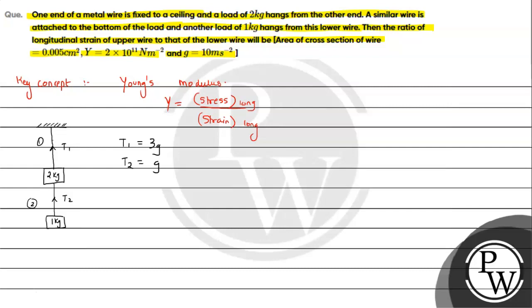We have to get tensions in both wires. Similarly, we need to write for the lower wire and for the first wire.